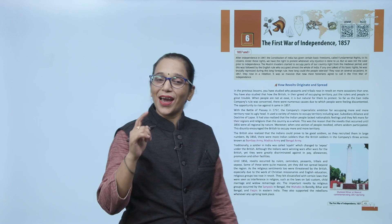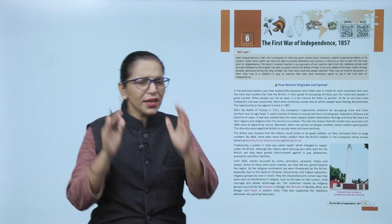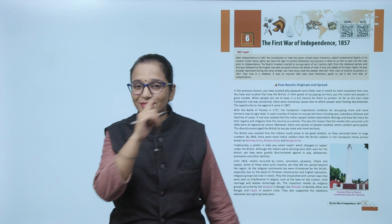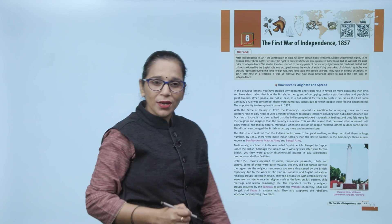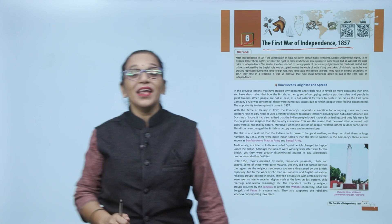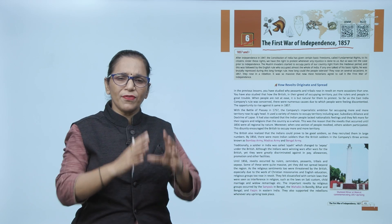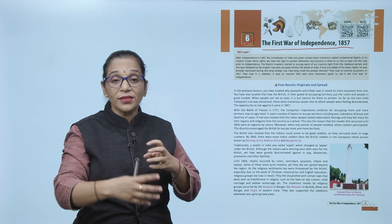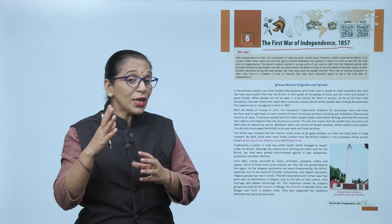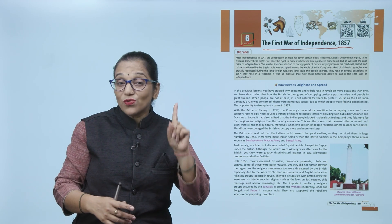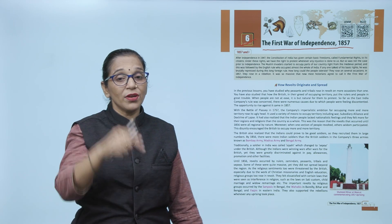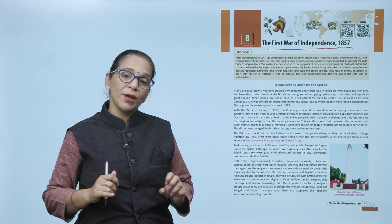Hello children, I hope you all are good. Today we are going to discuss a very interesting topic of your SST that is going to be categorized in history, chapter number 6. The name of the chapter is the First War of Independence 1857. In this chapter we are going to discuss the different stories, different rebels and revolts about the freedom struggle of India, and that too the 1857 revolt which is considered as the first war of independence for India.